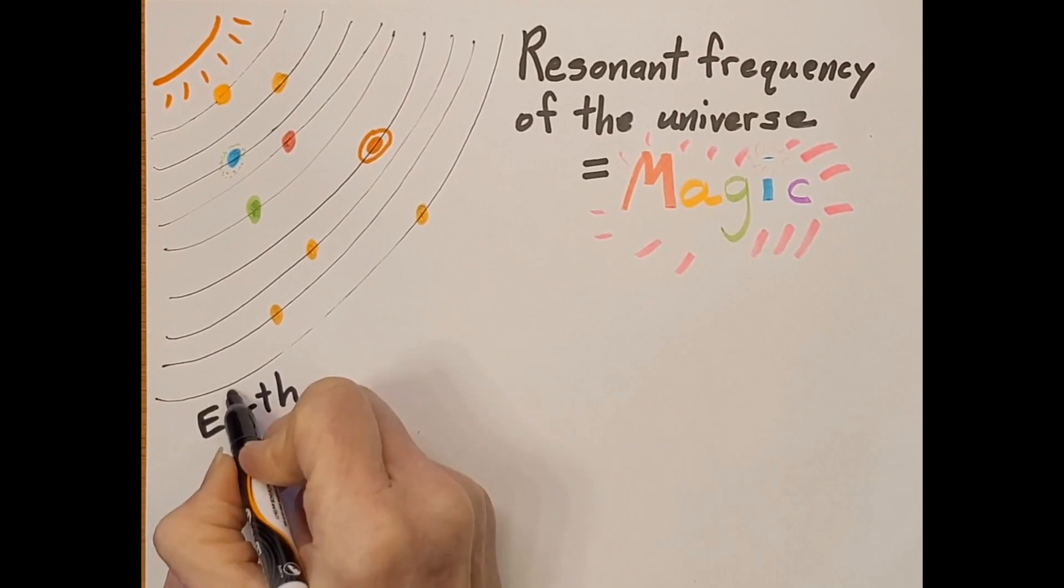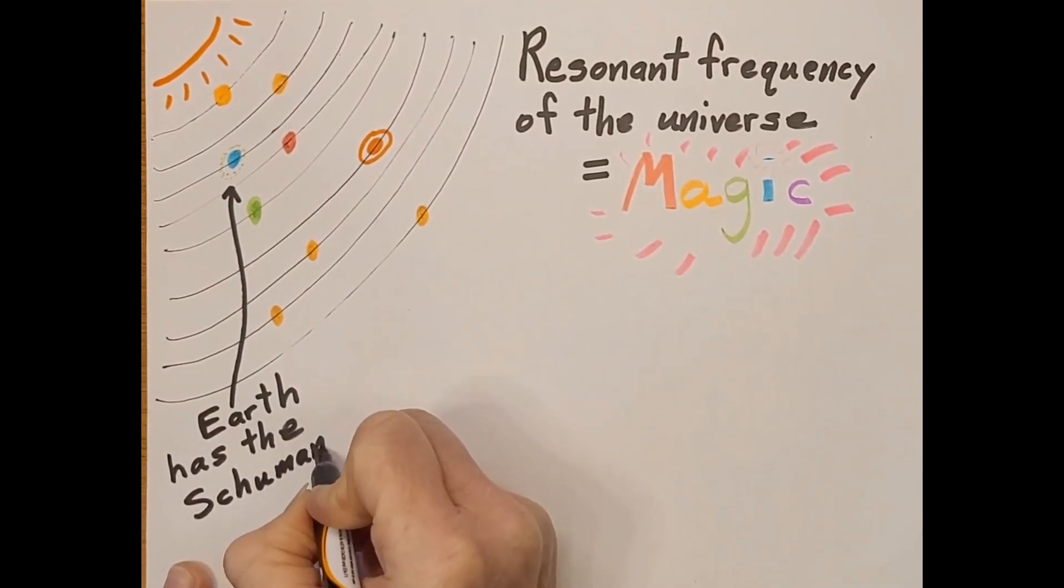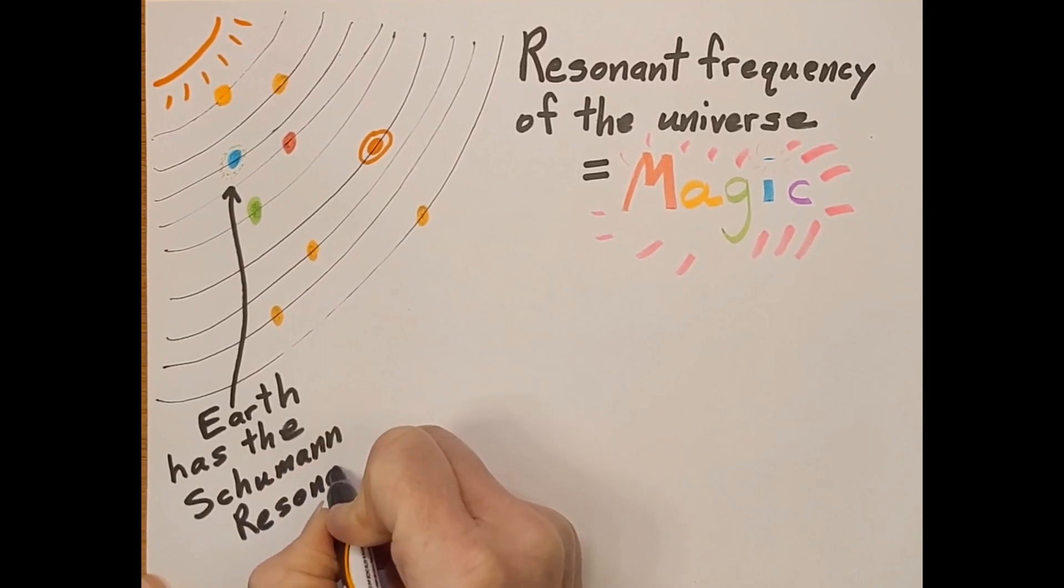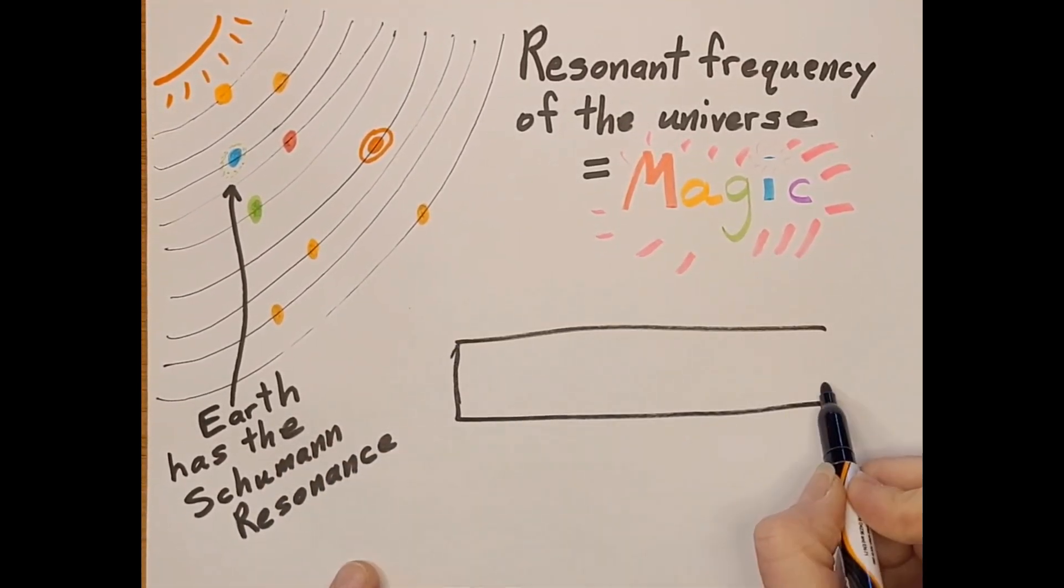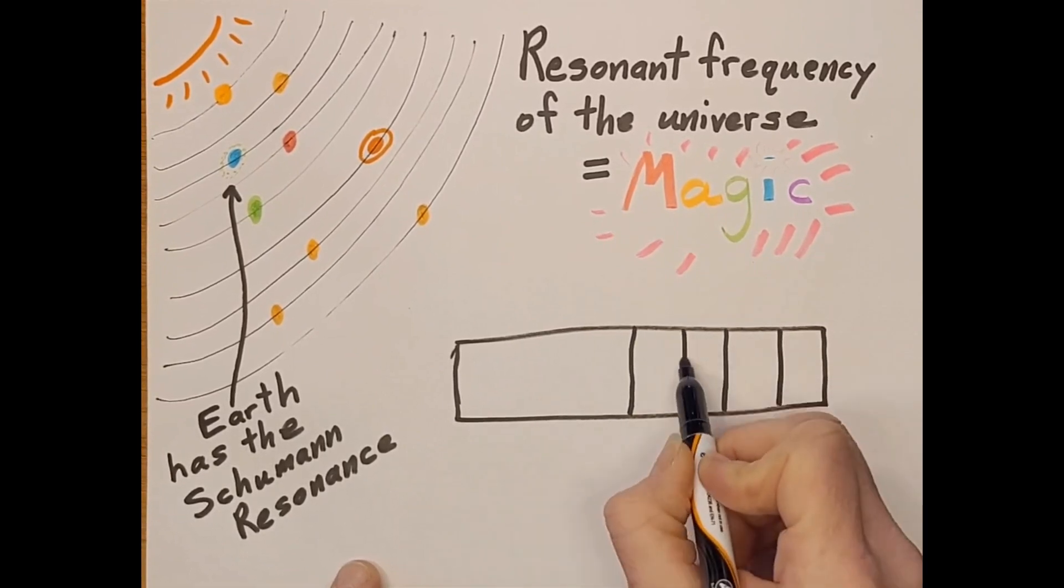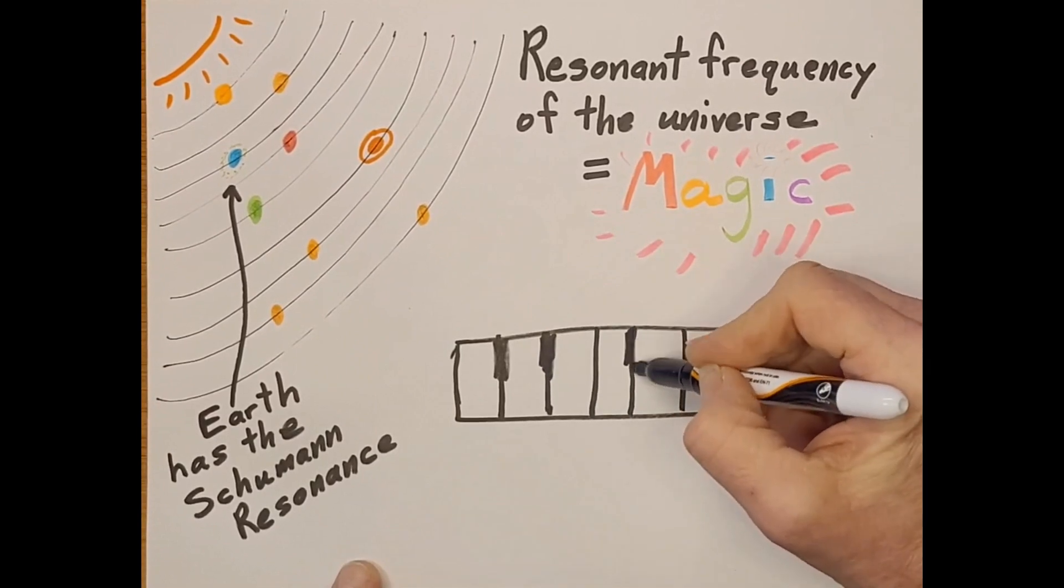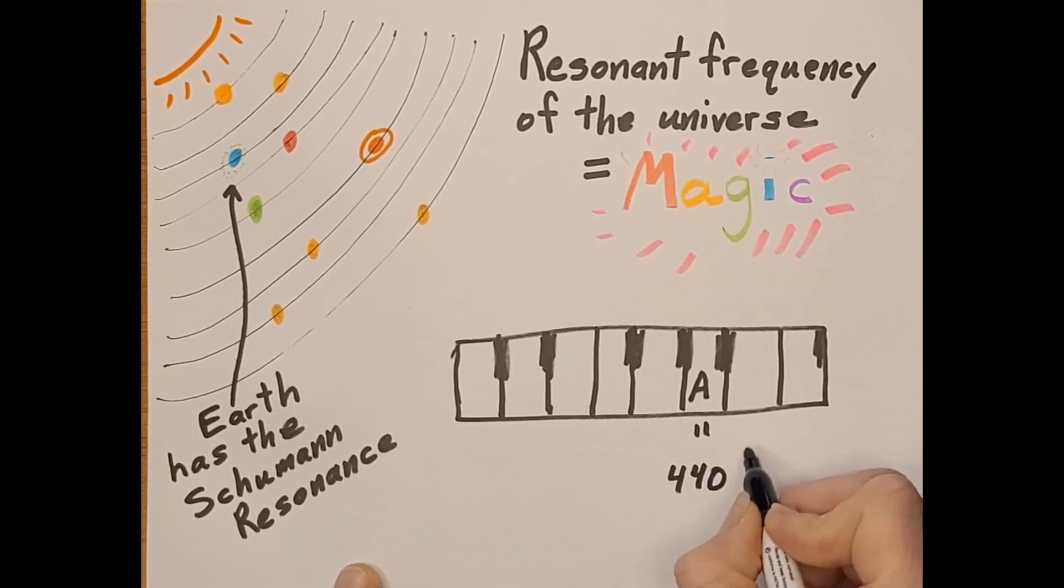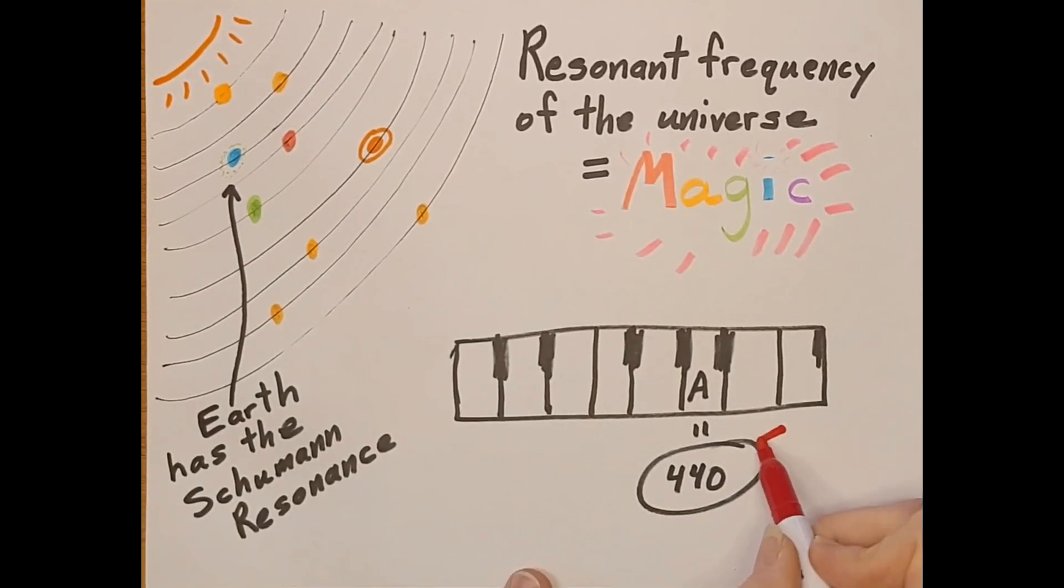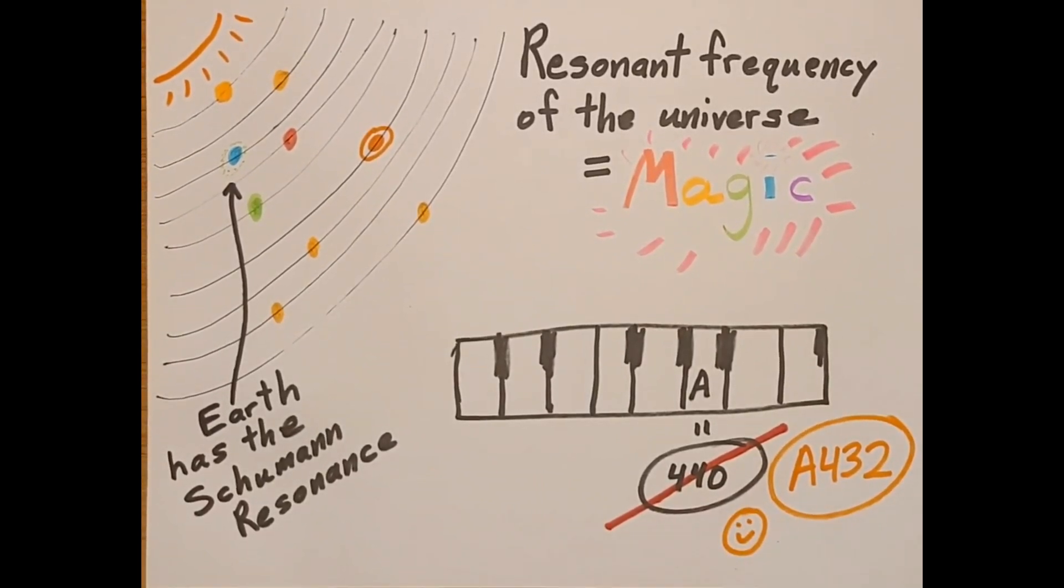There are several videos out there debunking A432 being a magic frequency, and the point of this video isn't to duplicate those, so I'll share links to a few of those in the description in case you'd like to check them out. The point of this video is only to explain some things about setting A on a piano to a frequency other than 440 because of one of these fads. The videos I'll put in the description also explain a bit about the history of our pitch standard as well as our definition of frequency, so I'll try to keep that information to a nutshell here.